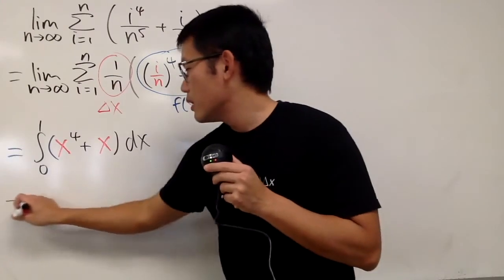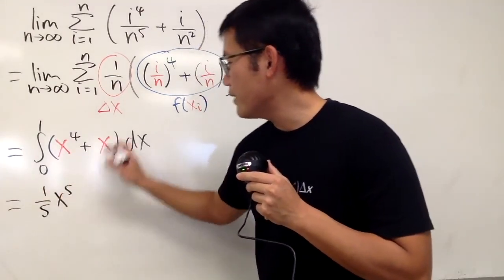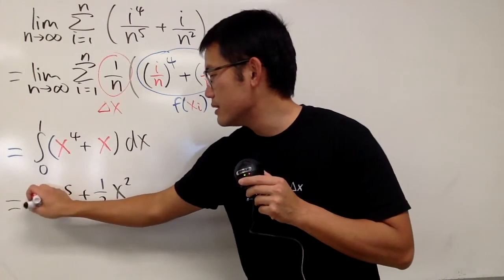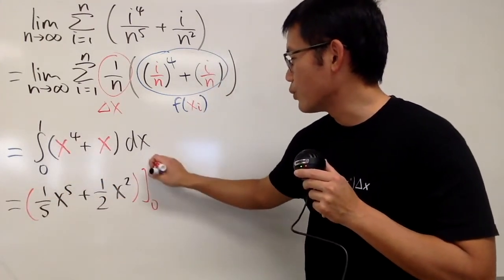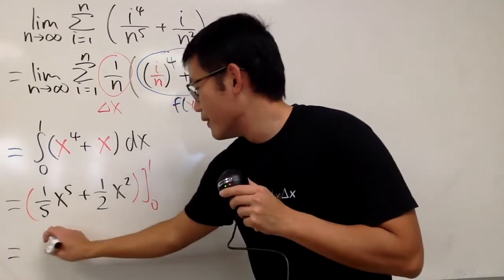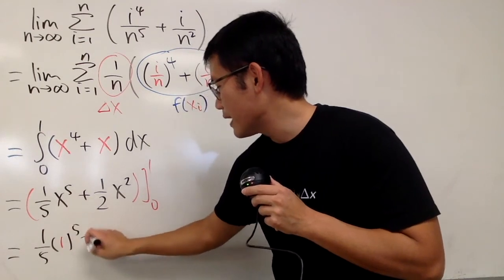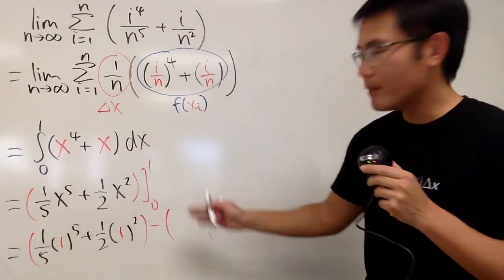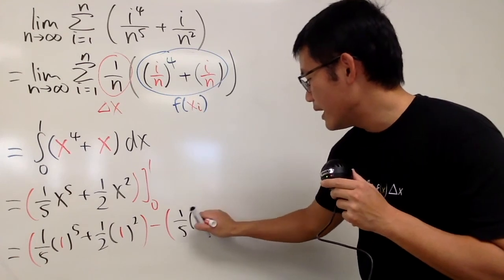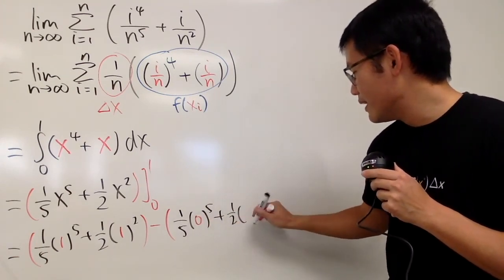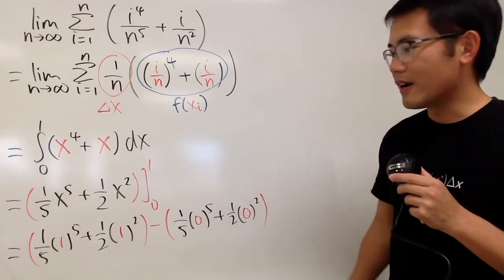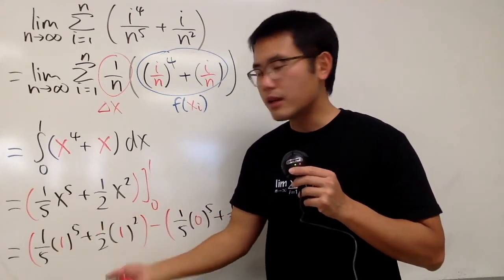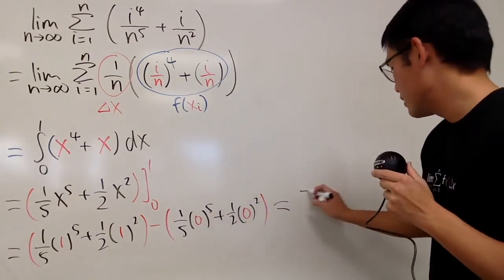Now let's go ahead and do this. Add 1 to the power divided by that, we get 1/5 x to the fifth, and then add 1 divided by the new power, so we get 1/2 x squared. You don't have to put a plus C because this is a definite integral, so you go from 0 to 1. We have 1/5 times 1 to the fifth plus 1/2 times 1 squared — that's the first part — minus the second part, plugging in 0: 1/5 times 0 plus 1/2 times 0 squared. That second part is 0, so this is 1/5 plus 1/2. Get your common denominator and you get 7/10 for your answer.